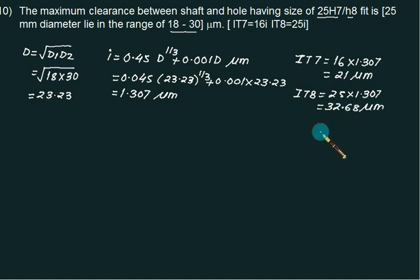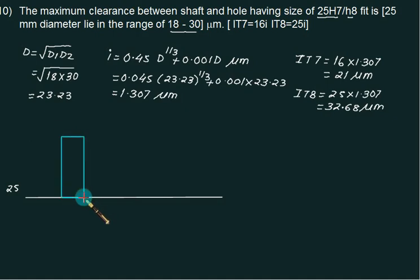Now we are ready with all dimensions. So we will go for both fundamental deviations are 0 because both letters are H letter. So basic size is 25. Since the fundamental deviation is 0, we have to only show tolerance band. So first of all we will go for hole. For hole we have tolerance band, it corresponds to IT7 is 21 microns. For S7 is 21 microns. So the minimum size is 25, so maximum size will be 25.021. Fundamental deviation for hole is also H which is 0 value.